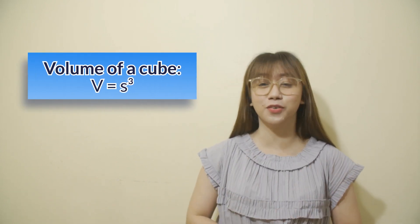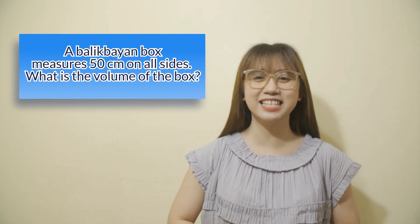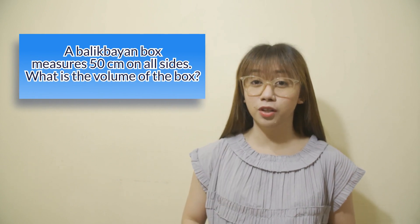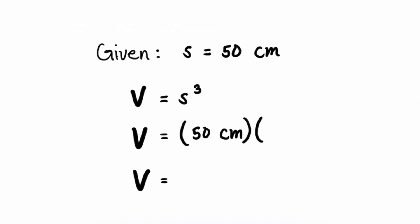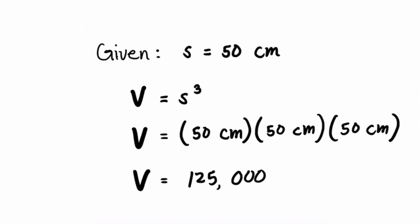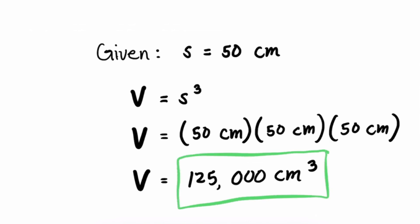To determine the volume of a cube, we simply multiply the side three times to get the volume. A Balikbayan box measures 50 centimeters on all sides. What is the volume of the box? The measure of each side is 50 centimeters. The formula is V equals S cubed. Substituting: 50 cm × 50 cm × 50 cm. Therefore, the volume of the Balikbayan box is 125,000 cubic centimeters. Good job!